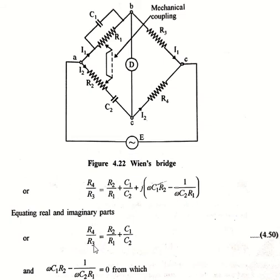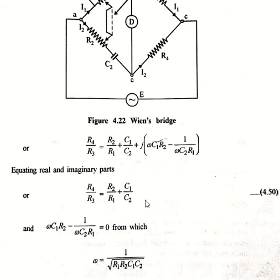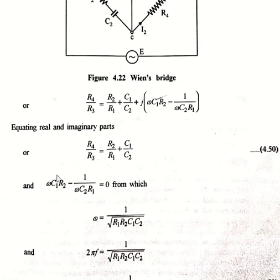By equating the real term we will directly have R4/R3 = R2/R1 + C1/C2. And by equating the imaginary part we will have ωC1R2 - 1/(ωC2R1) = 0.